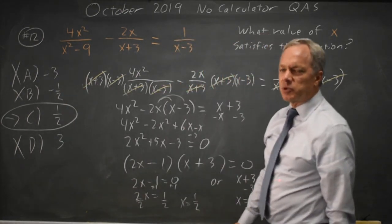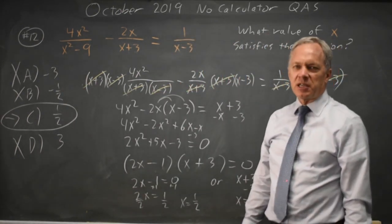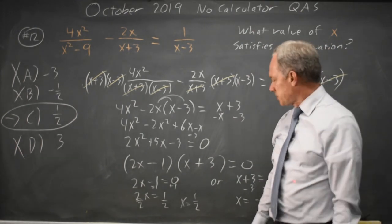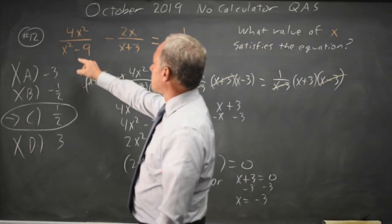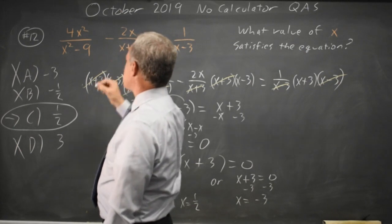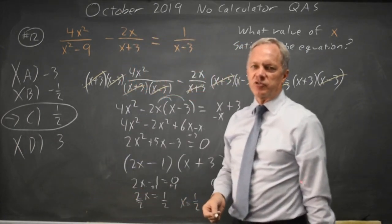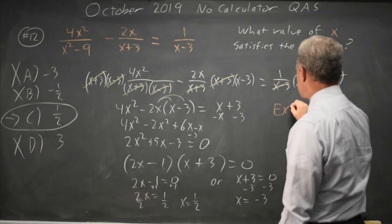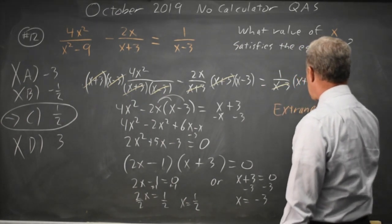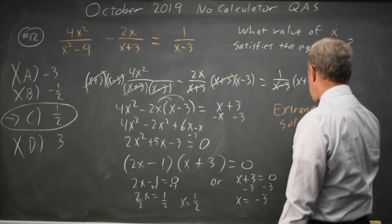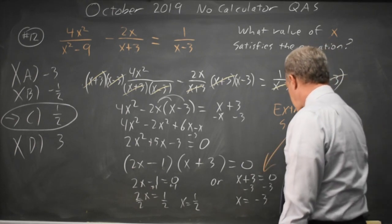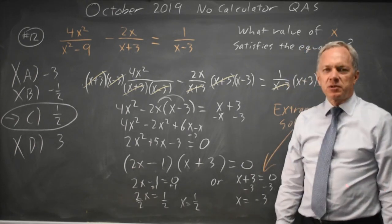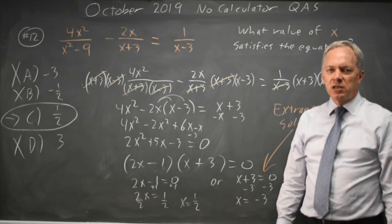If I had started with the algebraic approach, I would have had 2 answers and now I have to figure out which one is correct. When I substitute in negative 3, the first fraction and the second fraction both become undefined. So that is what we call an extraneous solution. Solving rational equations, you often need to check for extraneous solutions.